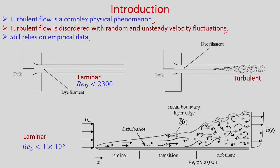Turbulent flow still relies on empirical data based on experiments. You are very familiar with the Reynolds experiment. We have a tank and a circular pipe. Liquid flows through the circular pipe and ink is injected at the centre of the pipe. If the flow velocity is very small, the dye goes in a straight line — this is laminar flow. For flow inside a circular pipe, if the Reynolds number based on diameter is less than 2300, the flow will be laminar.